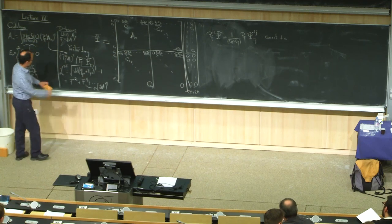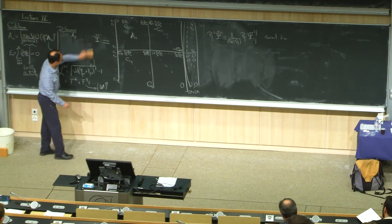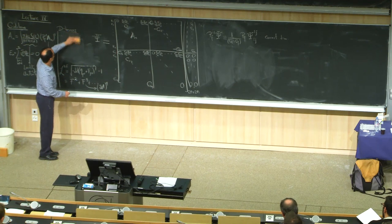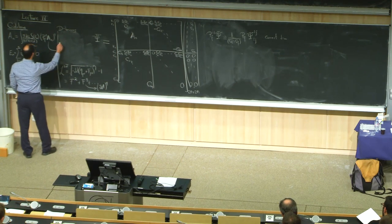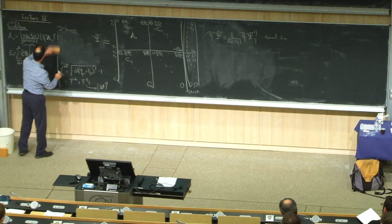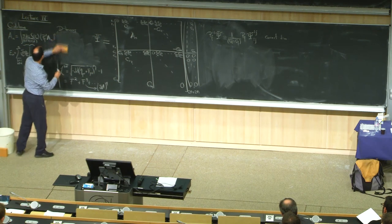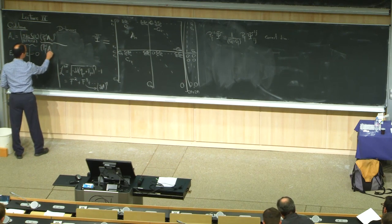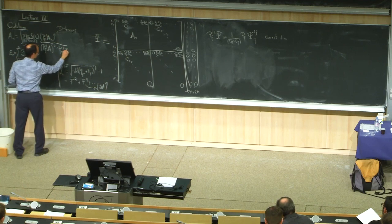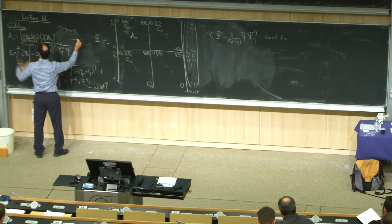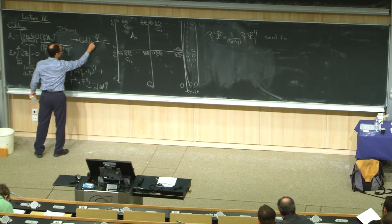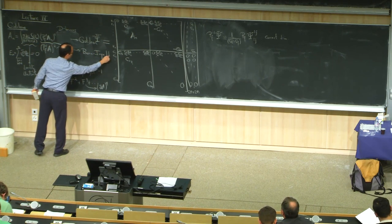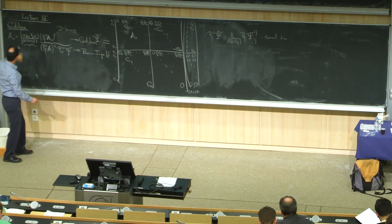Our Lagrangian for Born-Infeld, as complicated as it is with its infinite number of interaction vertices, has its full S-matrix contained in the following formula: the magic measure times Pfaffian prime of A squared times Pfaffian prime of Ψ. This was the Galilean theory; this is Born-Infeld.